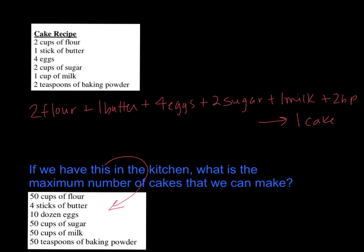If we have these ingredients in the kitchen, what's the maximum number of cakes we can make? We have to find out how many cakes each ingredient will produce. With 50 cups of flour we could make 25 cakes; four sticks of butter gives us four cakes; 10 dozen eggs (120 eggs) gives us 30 cakes; 50 cups of sugar gives us 25; 50 cups of milk gives us 50; and 50 teaspoons of baking powder gives us 25.